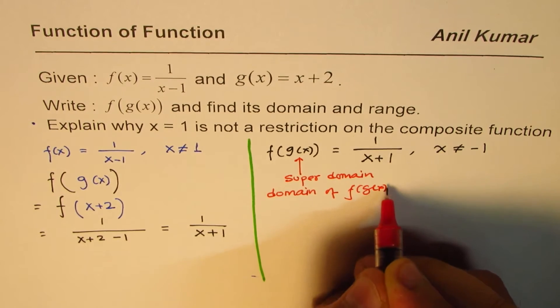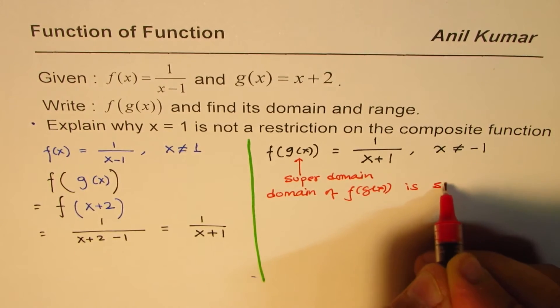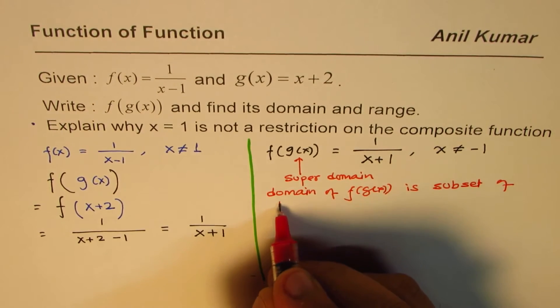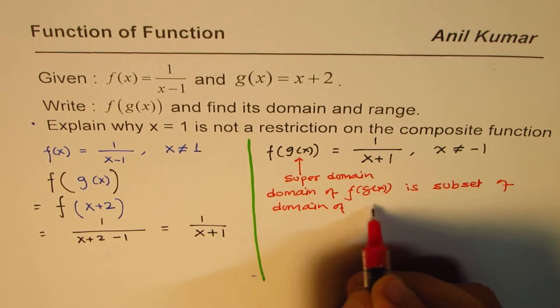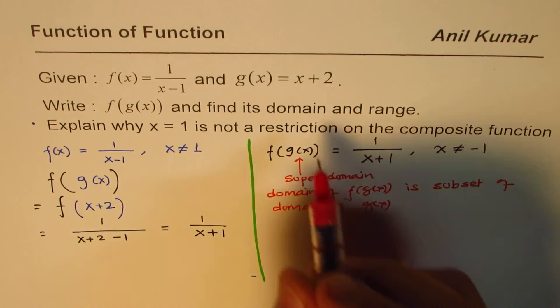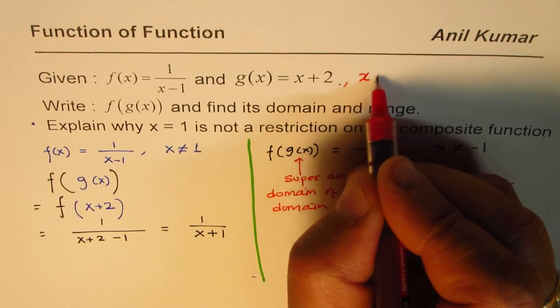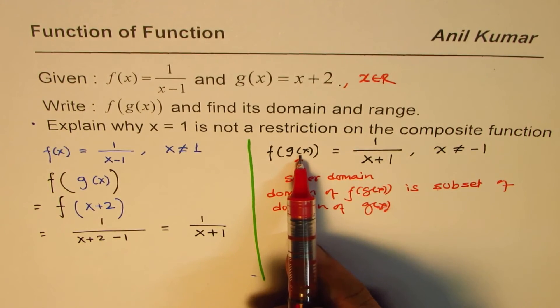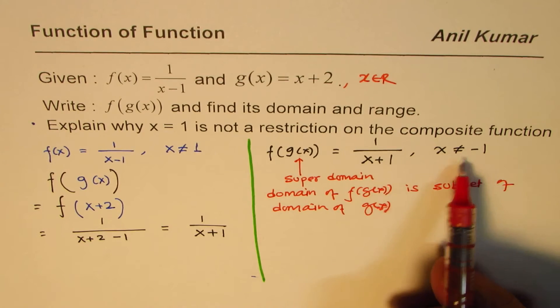f(g(x)) is a subset of the domain of g(x). Do you see that? For us this is all real numbers. Here x belongs to real numbers, so g(x) provided no restrictions. Therefore the only restriction we have is from